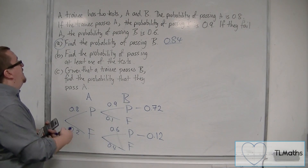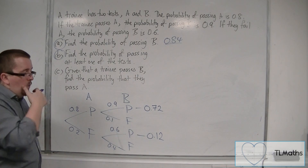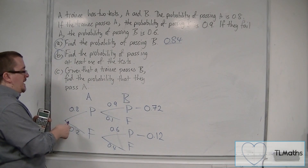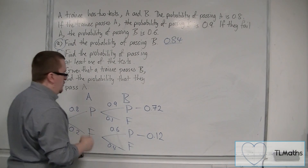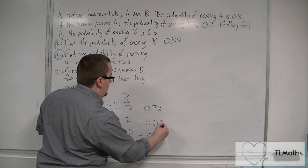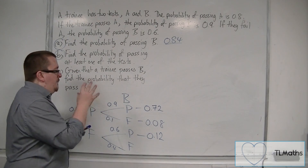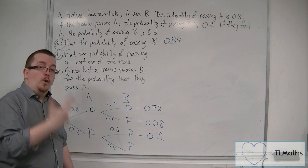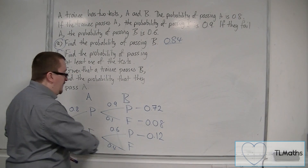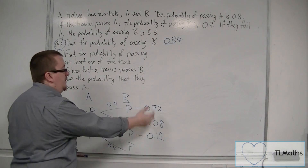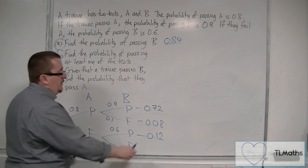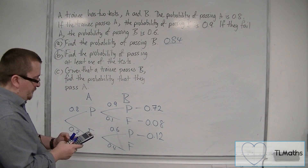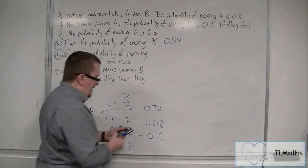Now find the probability of passing at least one of the tests. We've worked out the probability of passing A and passing B. We could also work out the probability of passing A and failing B: 0.8 times 0.1, which is 0.08. Passing at least one test means passing either A or B or both. There are three possibilities: passing just B (0.12), passing just A (0.08), or passing both (0.72). So 0.72 plus 0.08 plus 0.12 gives us 0.92.